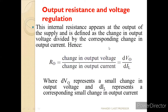Next we have the output resistance and voltage regulation. The output resistance appearing across the output of the supply is defined as the change in output voltage divided by the change in output current. The formula is R0 = dVout / dIL, where dVout represents a small change in the output voltage and dIL represents the corresponding small change in the output current. This follows from Ohm's law — voltage divided by current.